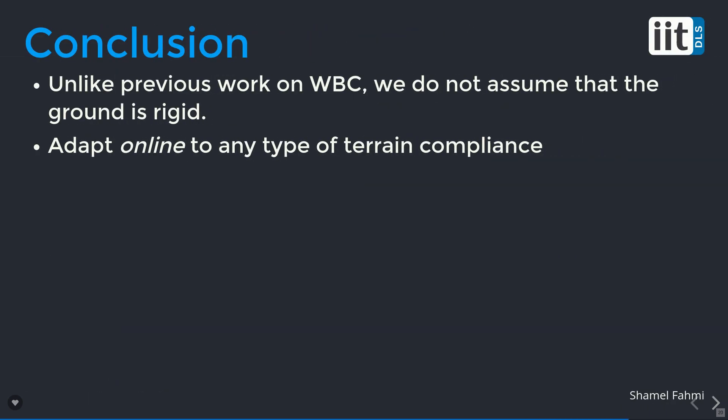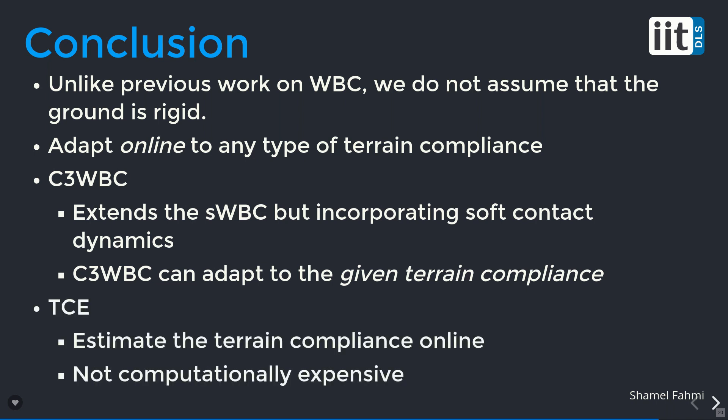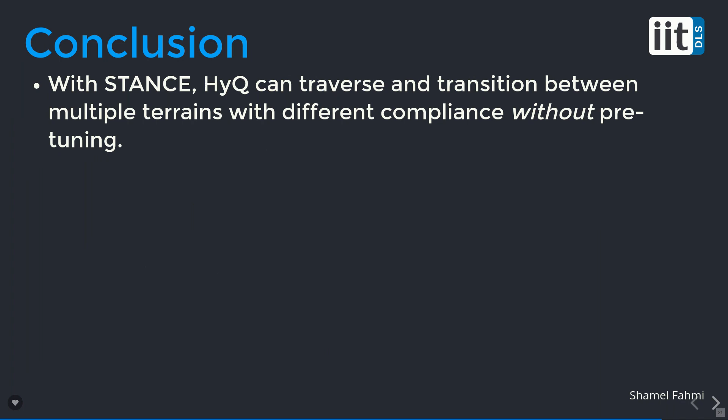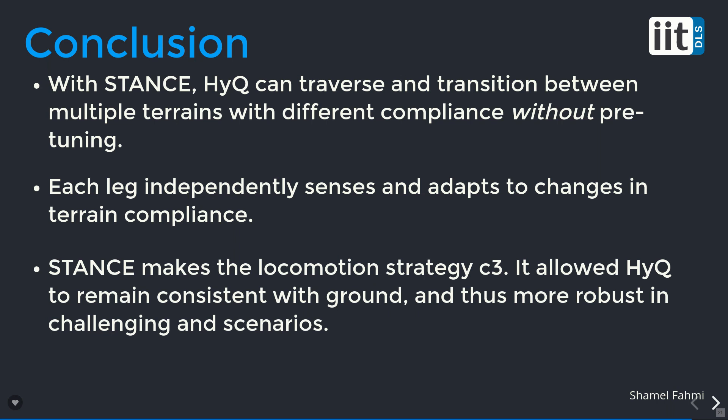In conclusion, we presented STANCE, which unlike previous work does not assume that the ground is rigid and can adapt to any type of terrain compliance online. STANCE consists of a new whole body controller formulation that can account for soft terrain given the terrain compliance, and a terrain compliance estimator that estimates terrain impedance parameters online without being computationally expensive. With STANCE, HiQ can traverse and transition between multiple terrains with different compliance without any pre-tuning. As shown in simulation and experiment, each leg can sense and adapt to changes in terrain impedance independently, and STANCE makes the locomotion control strategy compliant contact consistent, allowing HiQ to remain in contact with the ground and be more robust in challenging scenarios.